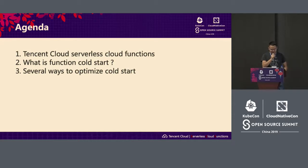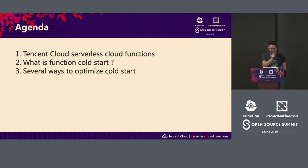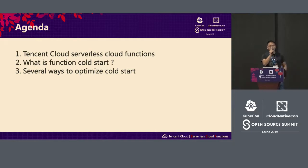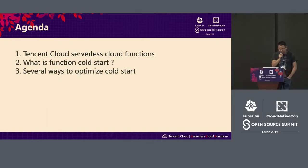First, I will introduce Cloud Function, called SCF — it is a function platform. I will talk about the architecture design and why you should consider such optimization. Second, I will talk about the cold start for the function. Third, I will introduce several ways to optimize cold start.